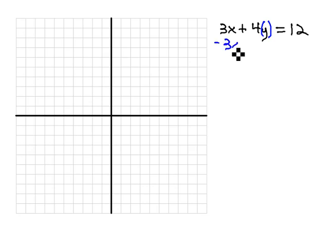We can start doing that by subtracting 3x from both sides. We now have 4y equals, putting the x term first, negative 3x and positive 12. Finally, get the y alone by dividing by 4.